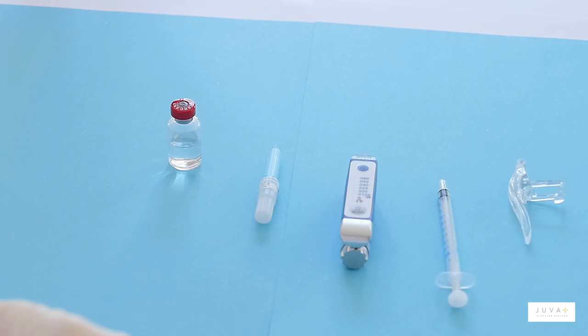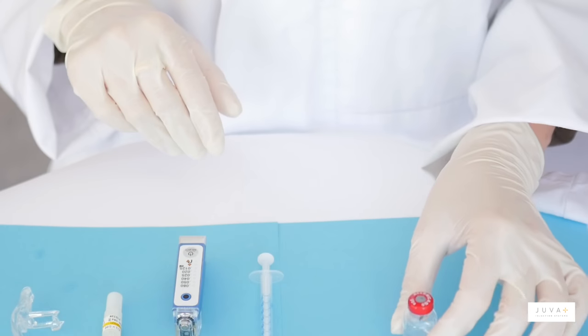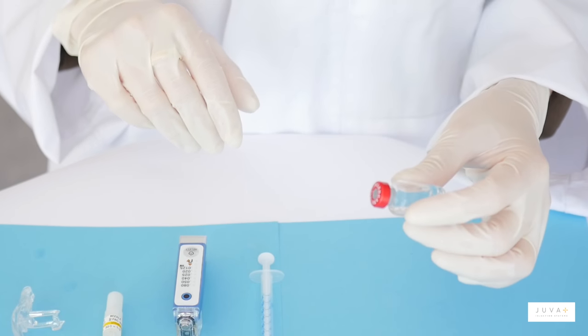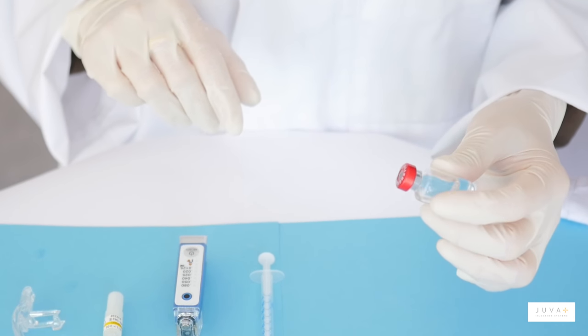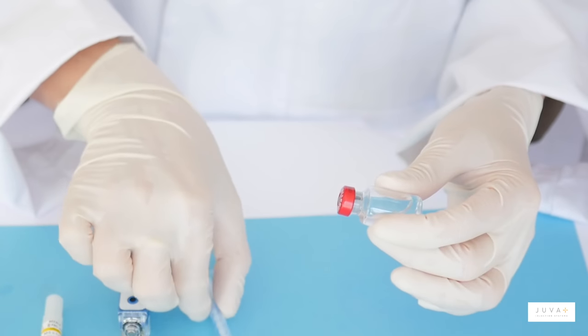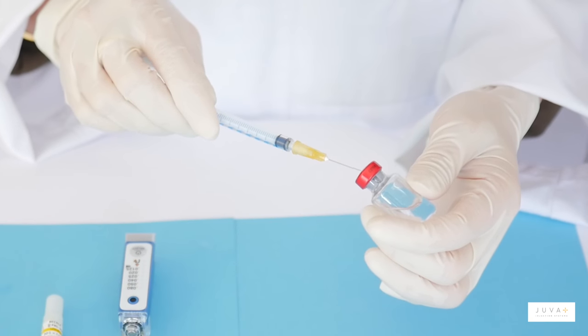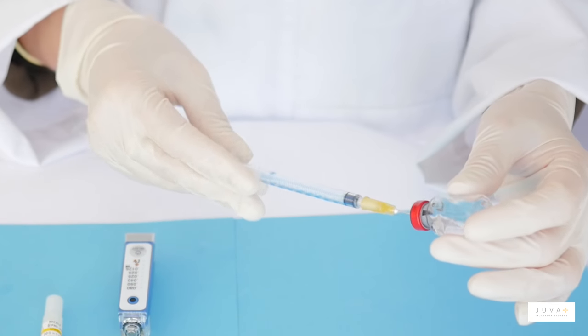This video will guide you through the preparation and use of the Jula Pen. At this point, the toxin product has already been reconstituted with saline solution to your own dilution. The next step is to draw up the product until the desired volume is reached.